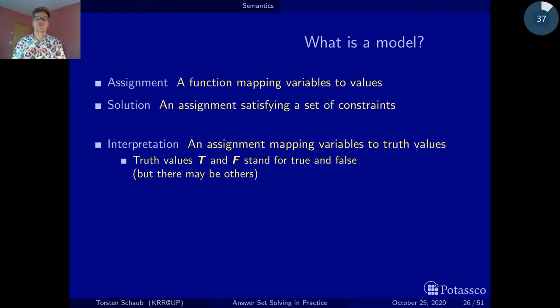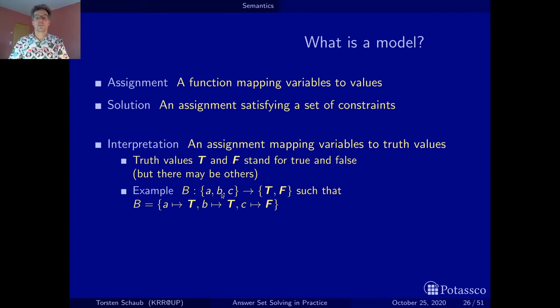An assignment is nothing else than a function mapping variables to truth values. Instead of having arbitrary values, we consider only truth values. In most cases, we consider a boolean setting. Boolean means we have two truth values, which we denote by uppercase T and uppercase F, which stands for true and false. But we'll also be using three-valued interpretations, sometimes with an additional third truth value that stands for undefined, to capture situations where we have not yet calculated the truth value of a variable.